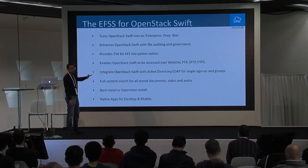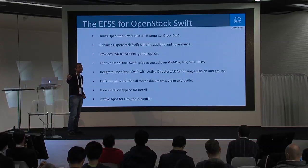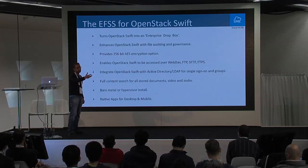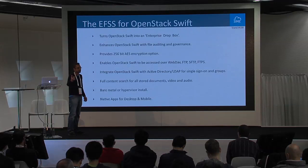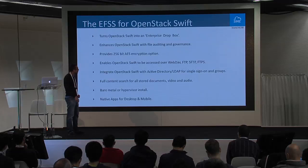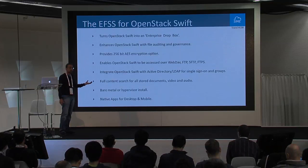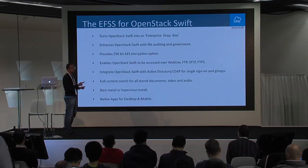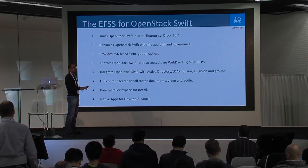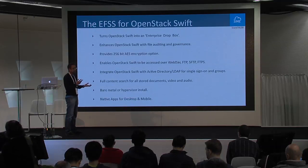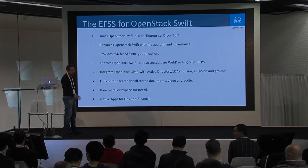We provide another appliance that indexes data stored in OpenStack Swift, and you can do content search — just like Google — at a text level or metadata level. When installing, you can install it on bare metal, or use Xen, Hyper-V, ESXi, or OpenStack Compute.